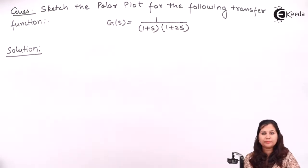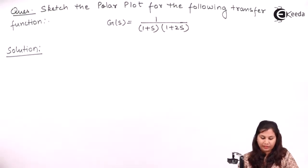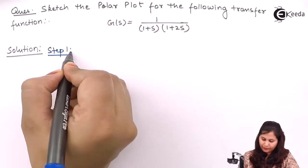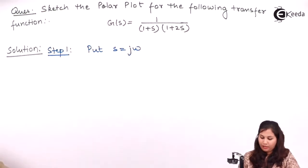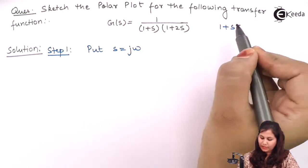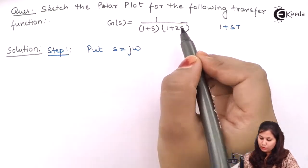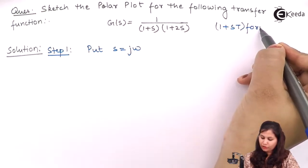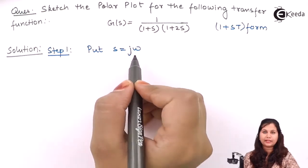For sketching the polar plot, the first step is to replace s by jω. Just check that the transfer function is given in the 1 + sT form, where T equals 1 in the first factor and T equals 2 in the second. It is already given in 1 + sT form, so we need not change it. Just replace s by jω.